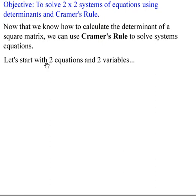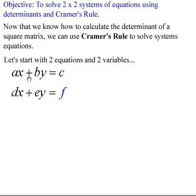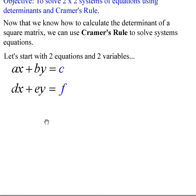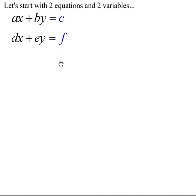So Cramer's Rule — we're going to start out simple in this particular lesson: two equations, two variables. It's important that we line everything up. Some coefficient a times x plus some coefficient b times y equals some constant c. Our second equation is some coefficient d times x plus another coefficient e times y equals another constant f. It's important that we have the x's lined up, the y's lined up, and the constants by themselves.